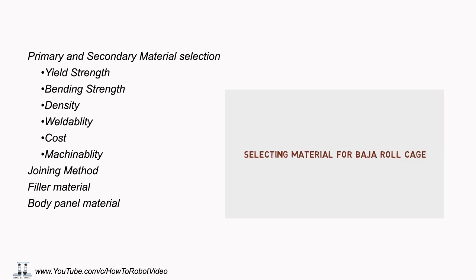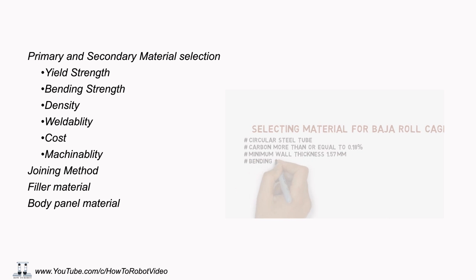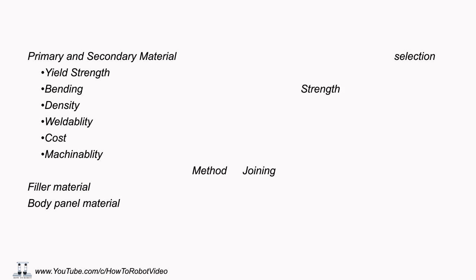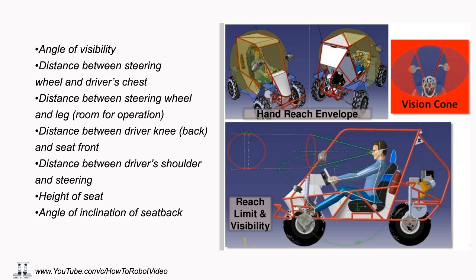Now design a CAD model of the roll cage in any CAD software, following the Baha SA India rulebook and using the material dimensions we have calculated. Use this model to measure the angle of visibility — mention both the solid angle of visibility and the planar angle of visibility, which is the angle below the horizontal line of sight. Also note the distance between the steering wheel and the driver's chest, and the distance between the steering wheel and the leg, which is the room for operation.